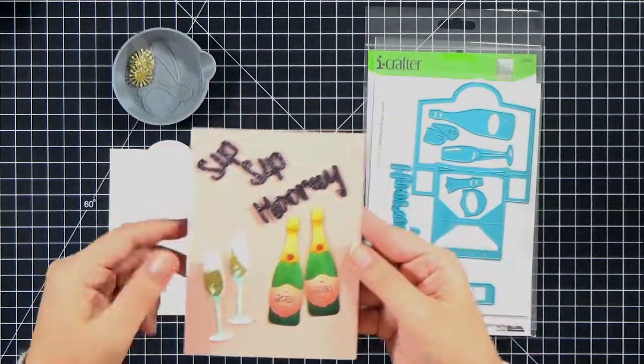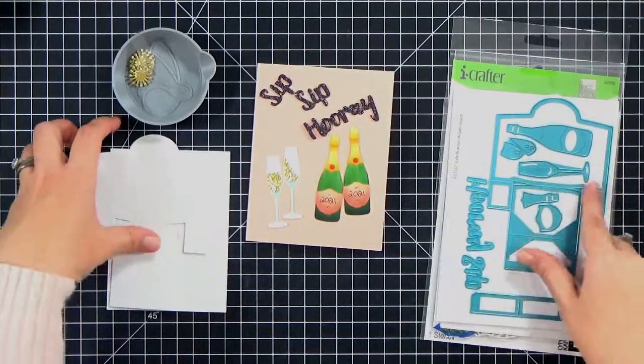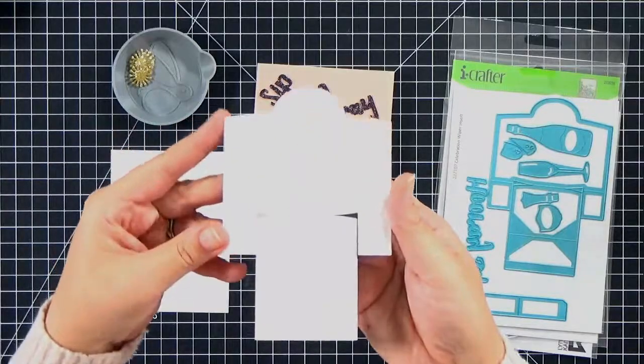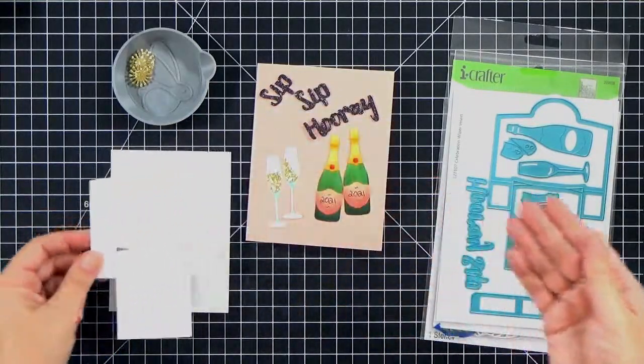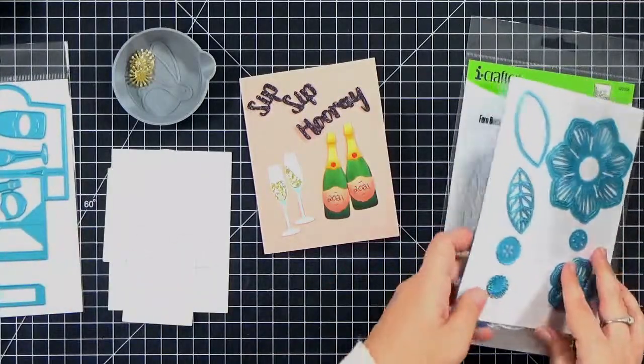My sentiments, I've got Sip Sip Hooray and I cut it out three times each in black cardstock or black glitter cardstock is on the top. For all of the other decorative elements I cut them from white cardstock except the gold champagne.